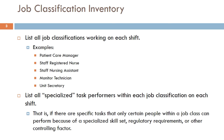In the left-most column, list all job classifications working on each shift. The example on your screen is from a nursing unit. An example of a specialized task performance would be if only certain nurses on the unit within the staff registered nurse class can start IVs. Such cases should be identified and listed as a separate class.